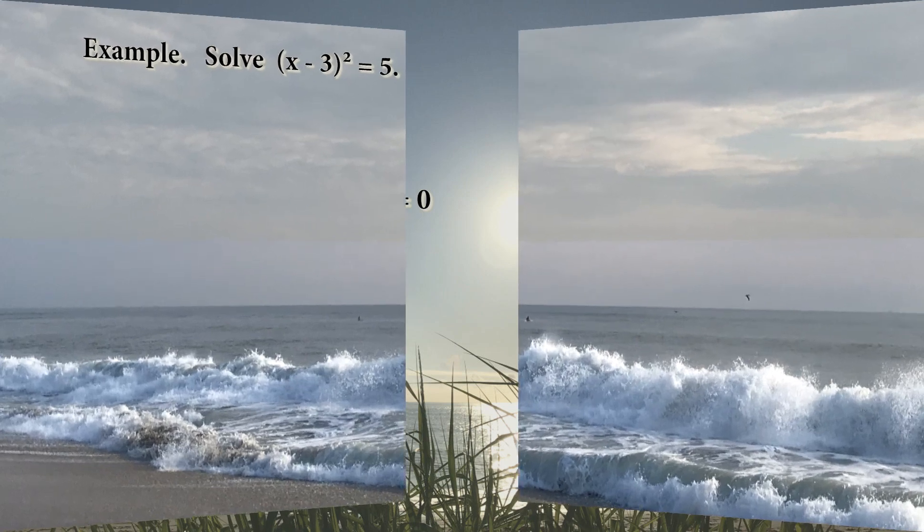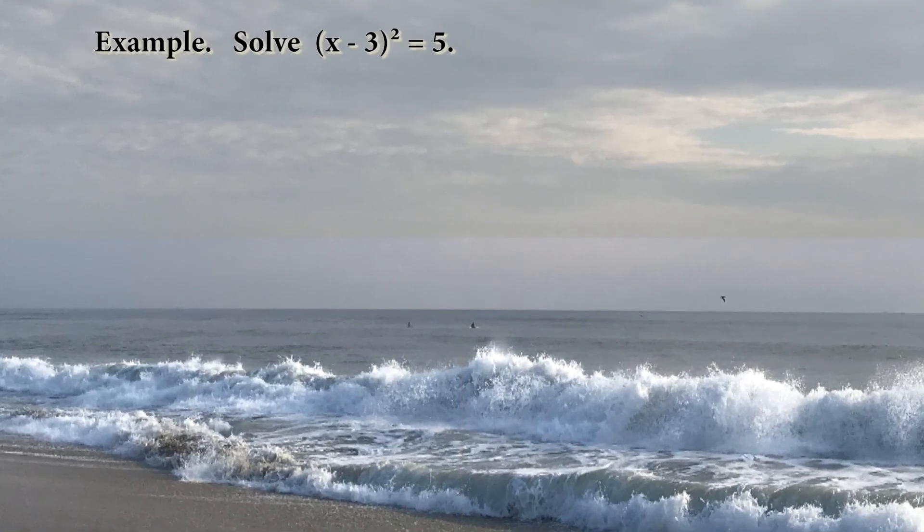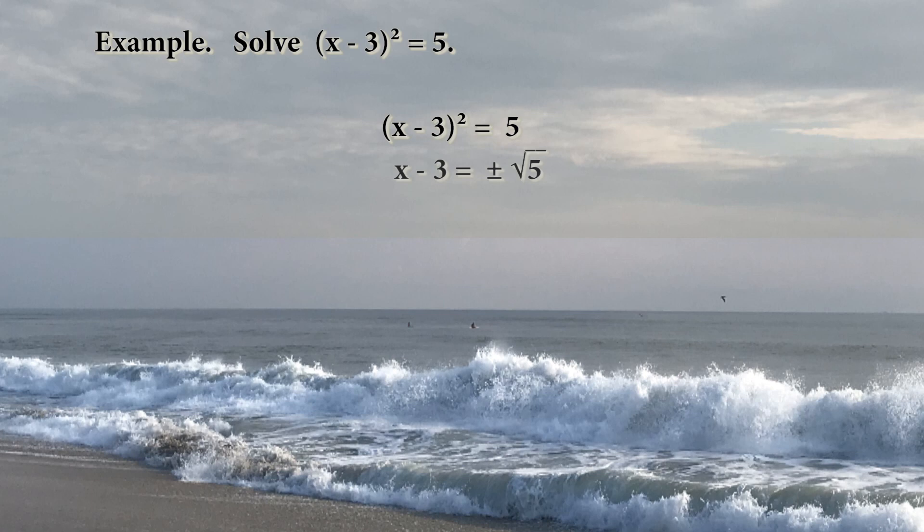Let's try to solve the equation x minus 3 squared equals 5 using the shortened method. We get x equals 3 plus or minus the square root of 5.